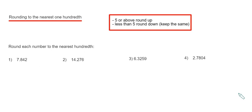Hi guys, welcome back. This is Maths3000. Today I'm going to show you how to round a number off to the nearest hundredth. This means we want our answer to have two numbers after the decimal point. So let's have a look at example 1.